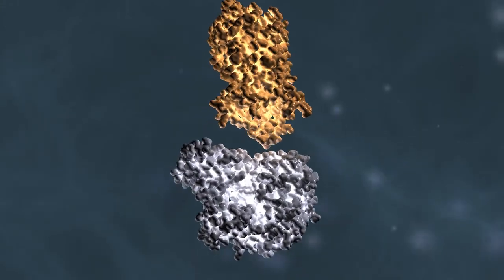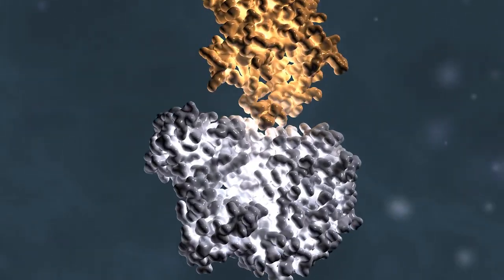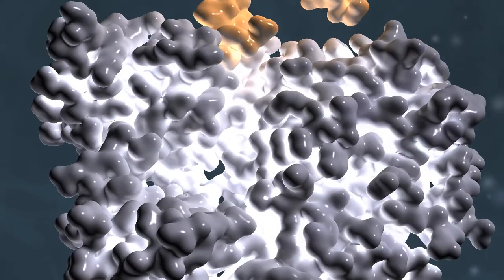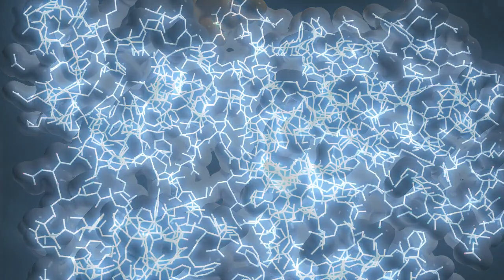The proteins communicate by moving around and binding to each other. Binding events like this one can change the internal motions of a protein.